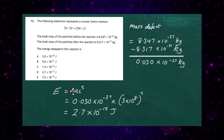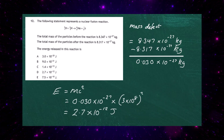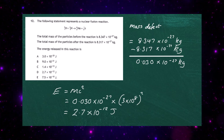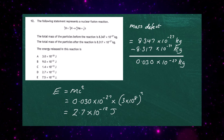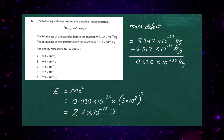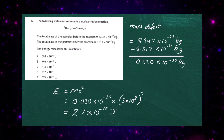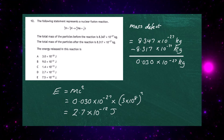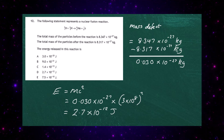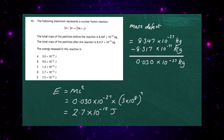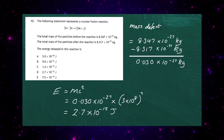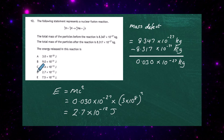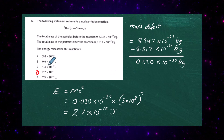M stands for the mass defect and c is the speed of light squared — that's the conversion factor for mass into energy. You multiply the mass defect by c² to get the energy value, and it works out to be 2.7 × 10⁻¹² joules. Therefore our answer for question 12 is D.